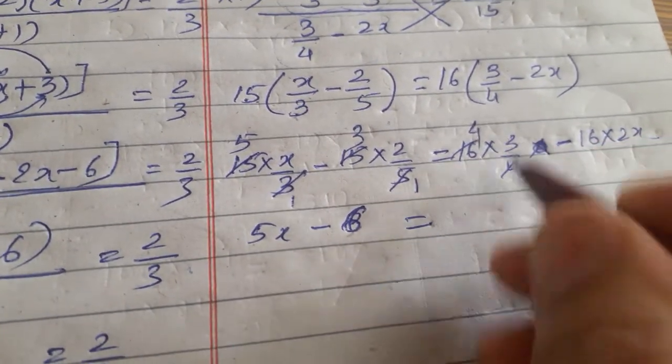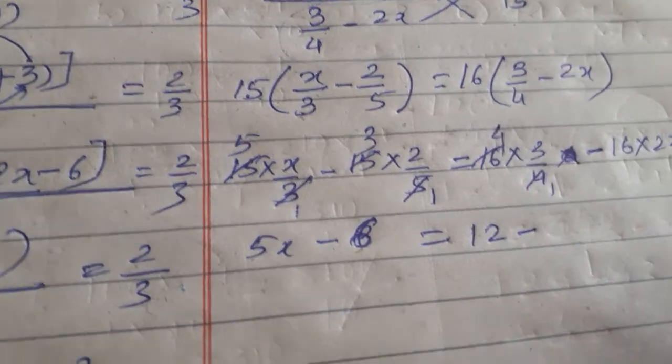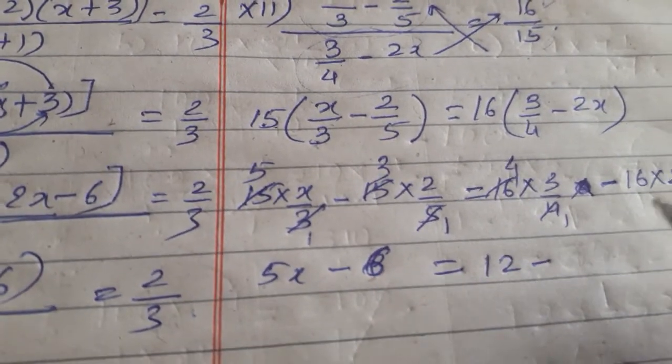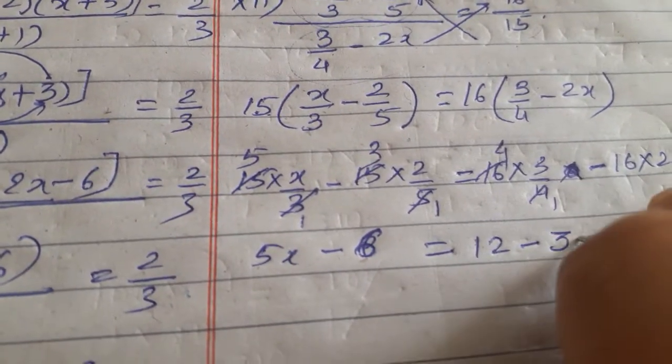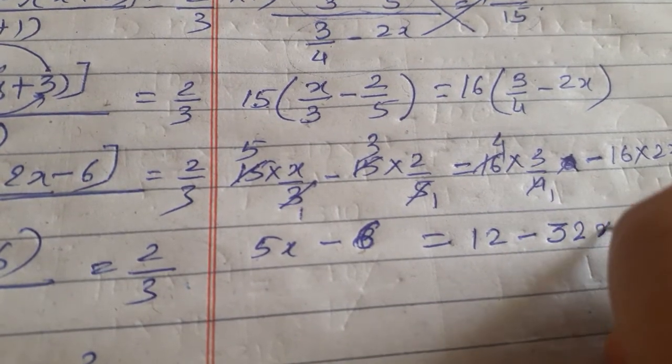4 1s are 4, 4 4s are 16, to 4 3s are 12 minus 16 into 2, that is 30 minus 32x.